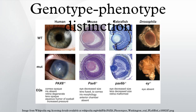The genotype-phenotype distinction is drawn in genetics. Genotype is an organism's full hereditary information, while phenotype is an organism's actual observed properties, such as morphology, development, or behavior. This distinction is fundamental in the study of inheritance of traits and their evolution.